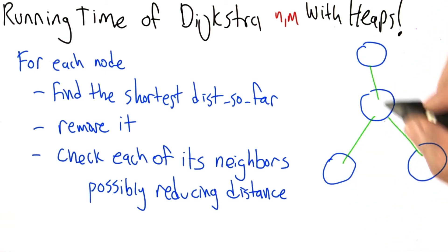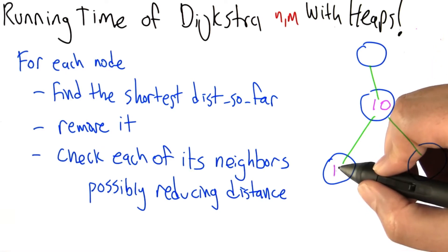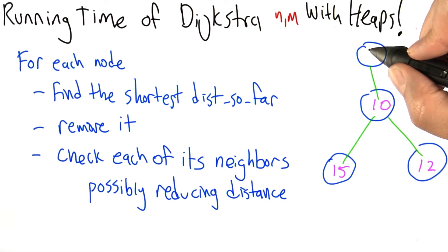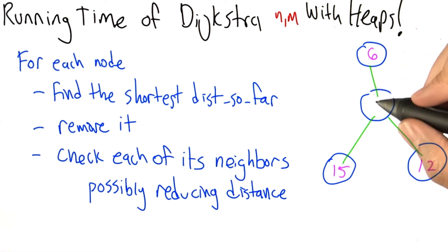If the heap property is satisfied, that means that whatever value this guy has, let's say it's 10, has to be smaller than both of its children, but bigger or no smaller than its parent. So what can happen if this node has its value reduced? Well, let's say it gets reduced a lot. Let's say it gets reduced all the way down to 1. The heap property is no longer necessarily satisfied.